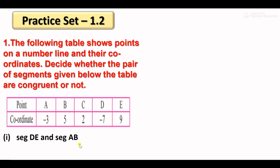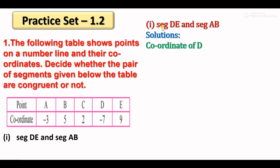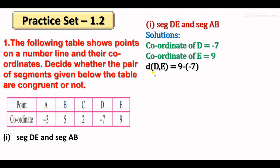To find segment DE: the coordinate of D is minus 7 and coordinate of E is 9. Using the formula — larger coordinate minus smaller coordinate — since 9 is greater than minus 7, we get 9 minus (minus 7), which is 9 plus 7, giving us distance DE equal to 16.